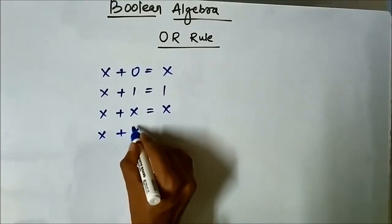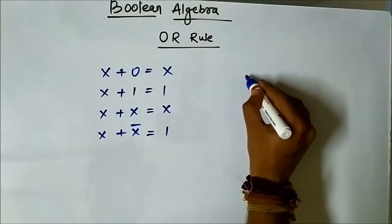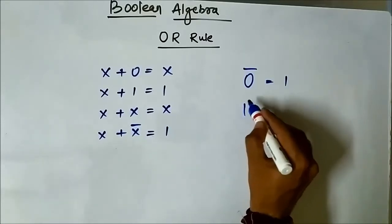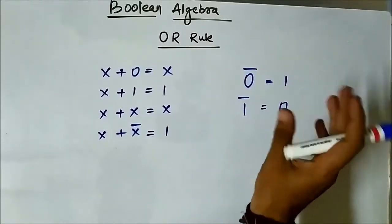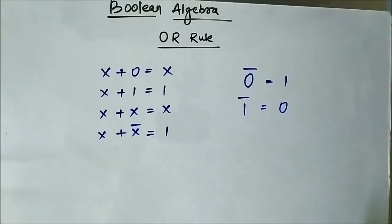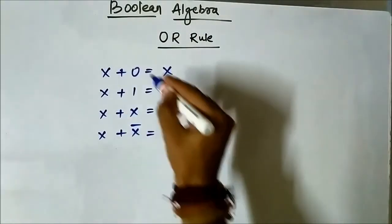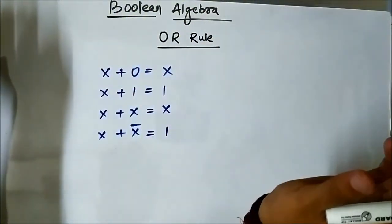X plus X-complement is equal to 1. Complement means: the complement of logic 0 is 1, and the complement of logic 1 is 0. It is also called inversion — the inverter or NOT gate operation. In Boolean algebra we have only two possibilities for a Boolean variable: either it is 0 or 1. These are the four rules associated with the OR operation, also called OR rules in Boolean algebra.